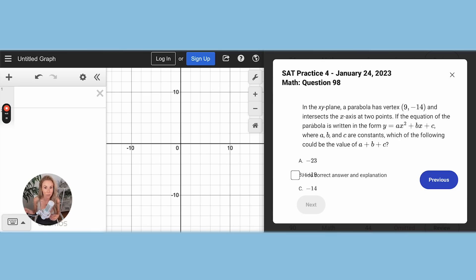If the vertex is at (9, -14), I'm going to go ahead and type in an equation in vertex form. So the only thing we don't know is the A. We don't know if it's flipping up or down. We don't know if it's wide or narrow. So I'm just going to leave it as an A and put a slider in.